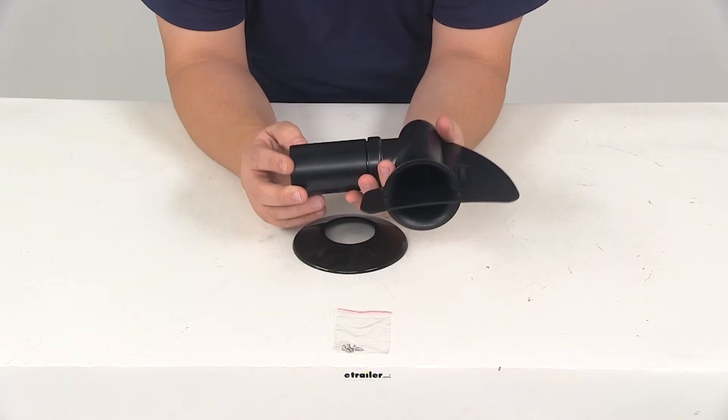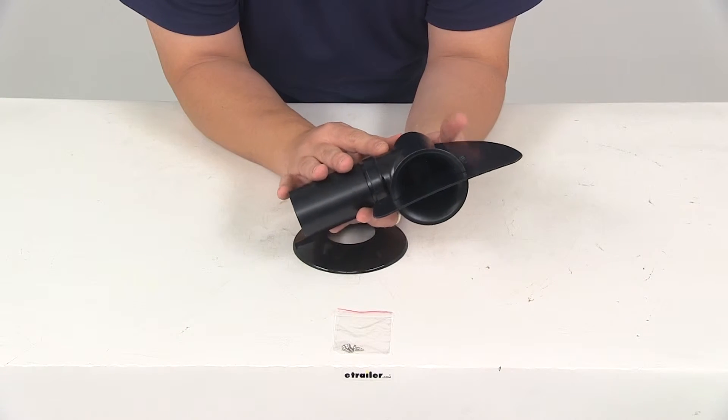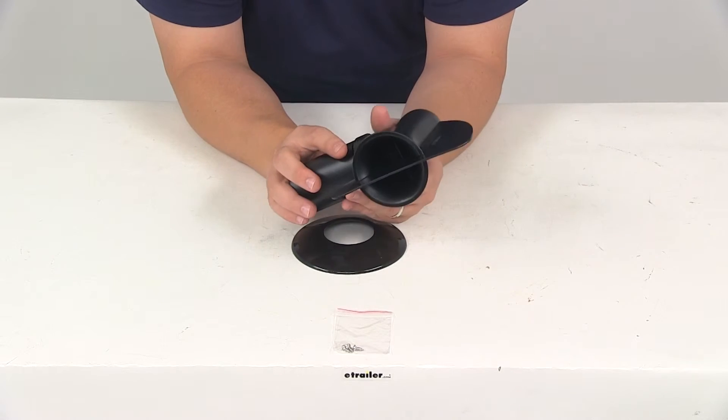Now this piece is actually made from durable polystyrene plastic, so it's going to resist corrosion and UV rays. This is designed for inch and a half outside diameter pipes.